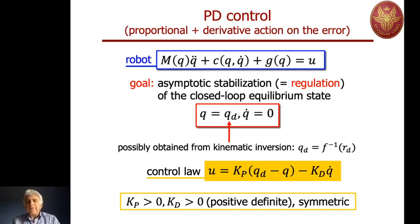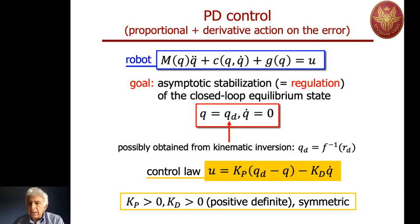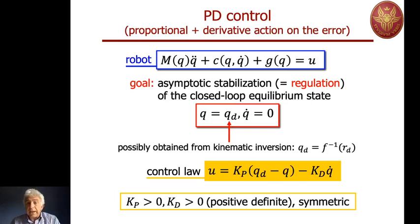At this stage we have a desired configuration. In this control law, we make an assumption — which we will see is also necessary — that the two gain matrices are both positive definite. Without loss of generality, we consider them symmetric. The first thing to consider is whether this control law satisfies the condition for obtaining an equilibrium in the closed loop at the desired configuration.